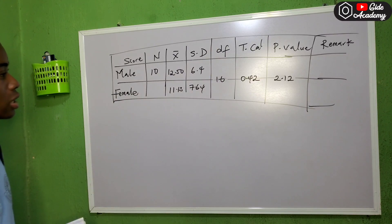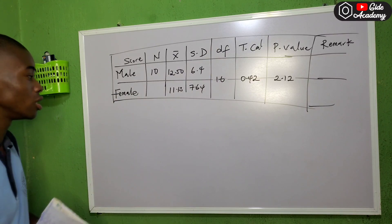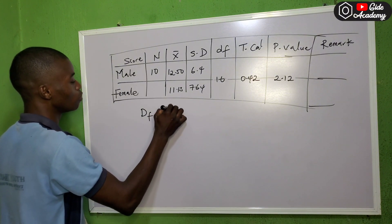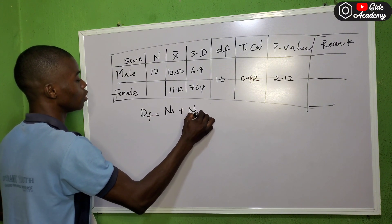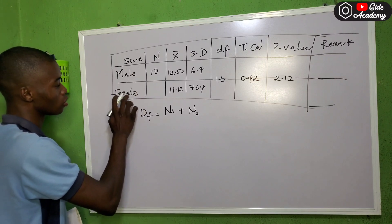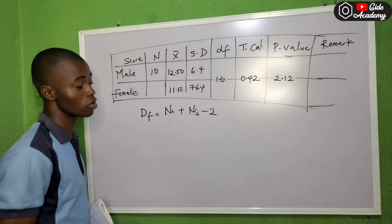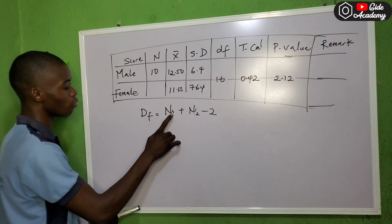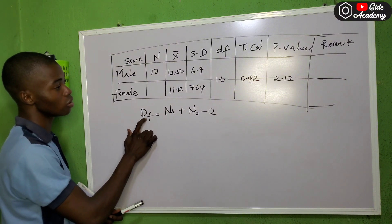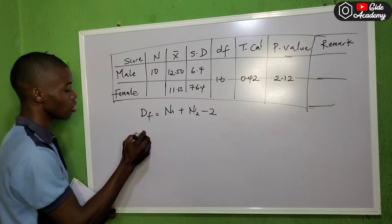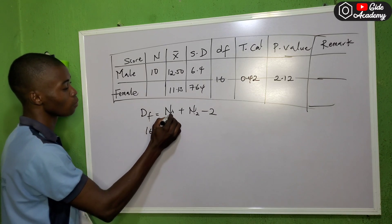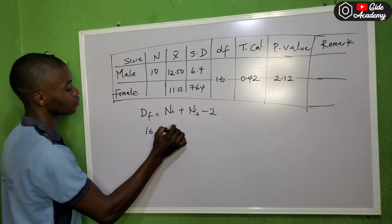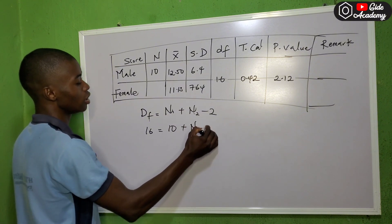The degree of freedom is given to us as 16. The formula for degree of freedom is: df = number of males + number of females minus two. So we have df = n1 + n2 - 2. The degree of freedom is given as 16.